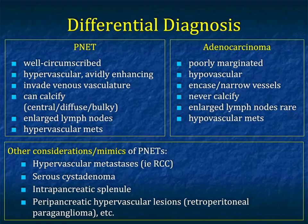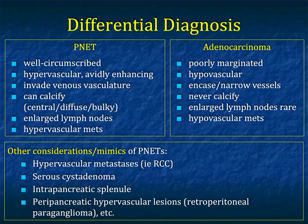Liver metastases from adenocarcinoma are typically hypovascular. With neuroendocrine tumors, they're often well-defined, hypervascular, and very brightly enhancing. They invade venous structures with a scalloping-type appearance, and commonly calcify — centrally, diffusely, or in a very bulky pattern. You can see enlarged lymph nodes which are vascular, and liver mets are typically hypervascular.